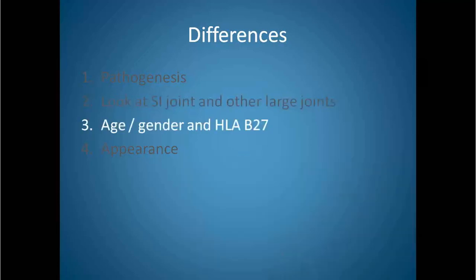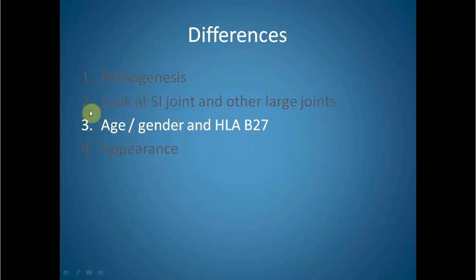Another difference is age, gender, and HLA-B27 positivity. HLA-B27 is positive in cases of seronegative spondyloarthritis, and these cases are generally young males. Whereas degenerative spine disease affects elderly individuals irrespective of gender.